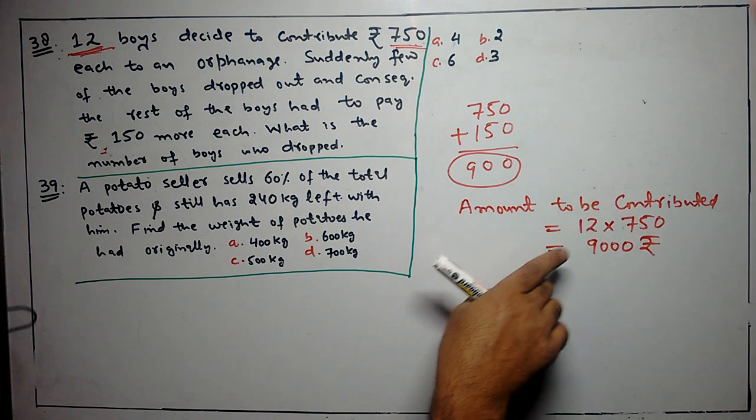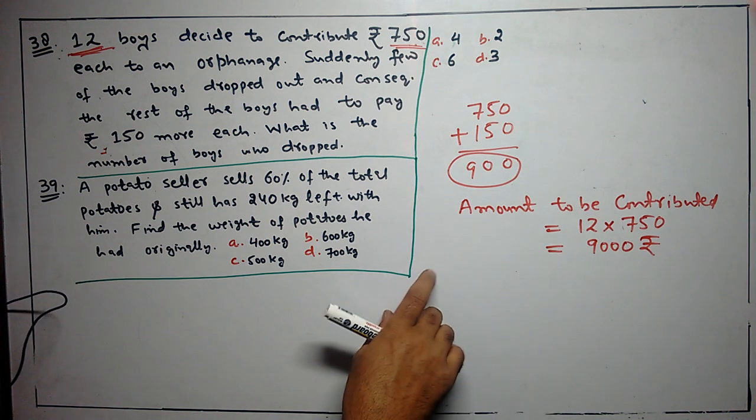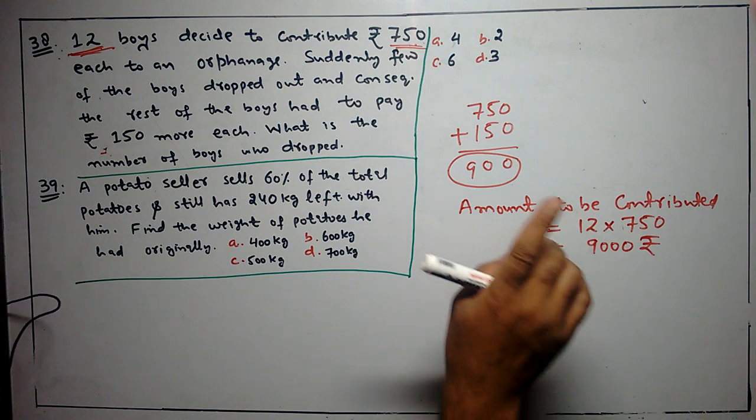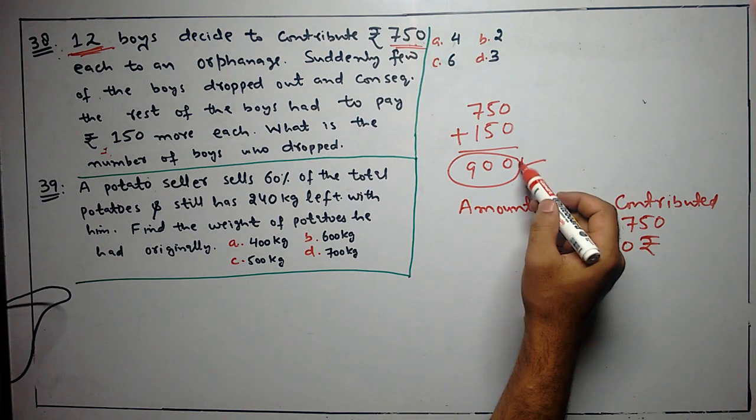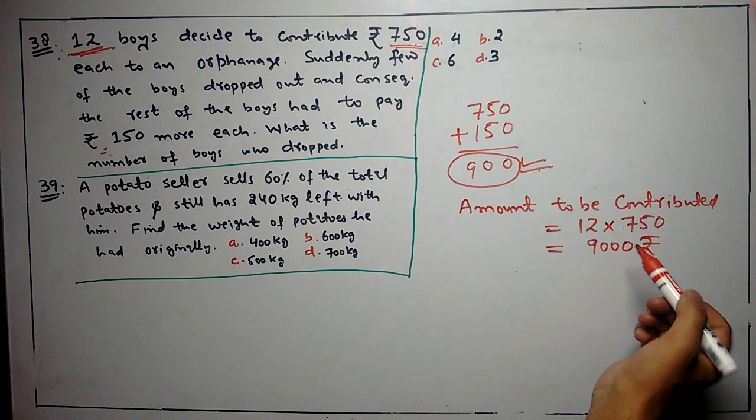What happened is that some boys left, and the rest of them paid total 900 rupees each. That means we have to know how many boys paid 900 rupees.